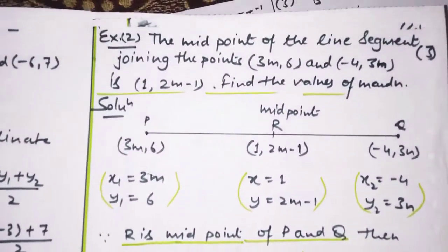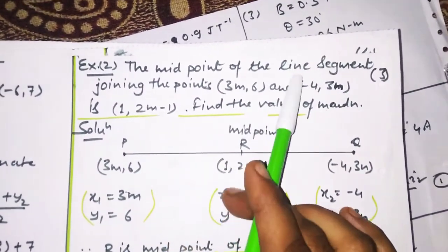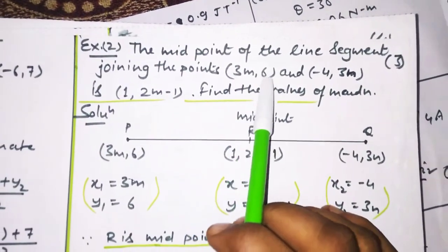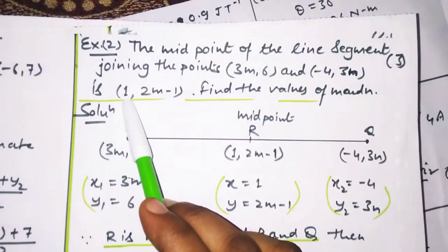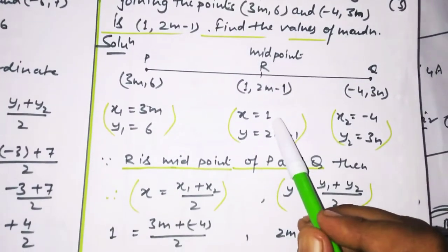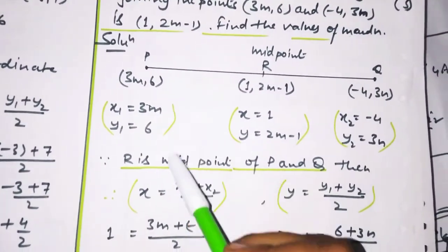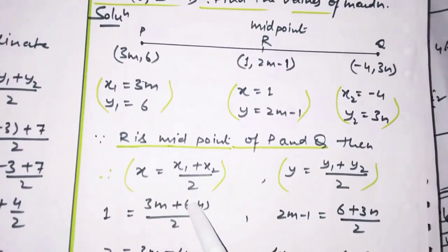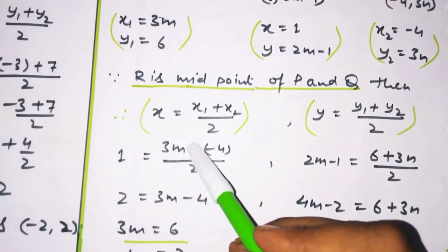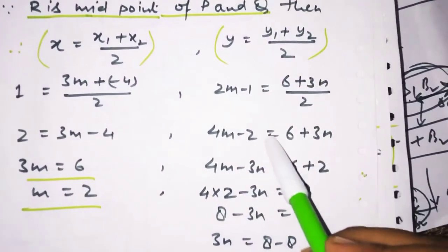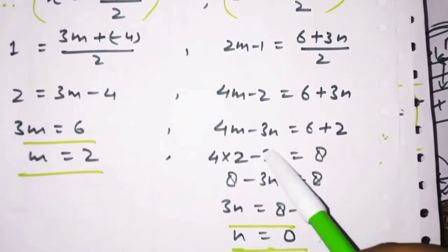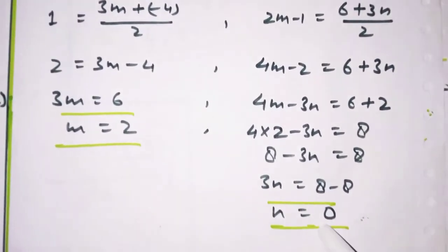Ek aur formula wala question dekh lete hain jo exam mein bahut zyada aata hai: The midpoint of the line segment joining the points (3M, 6) and (−4, 3N) is (1, Y). X1, Y1, X2, Y2 diya hai, midpoint given hai. X ki value 1 hai — 1 ki jagah put karenge: (3M + (−4))/2 = 1, solve kiya, M ki value 2 aa gayi. Y1 = 6, Y2 = 3N, solve kiya, N = 0. M aur N find karne the — answer aa gaya: M = 2, N = 0.